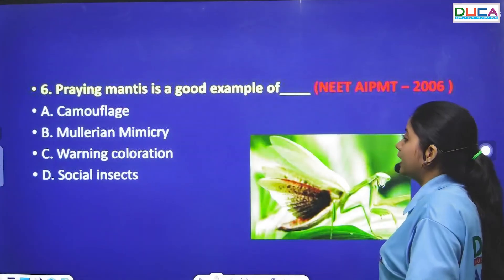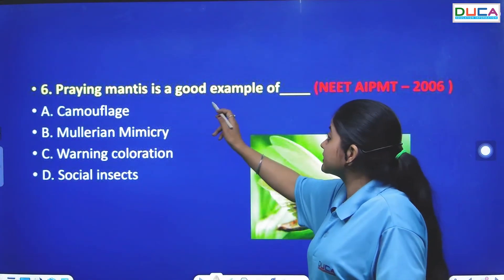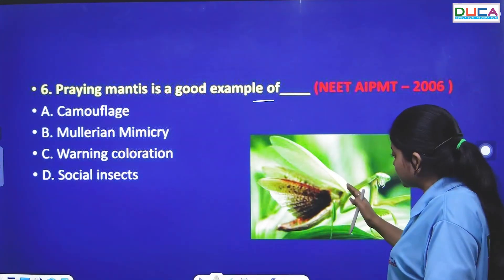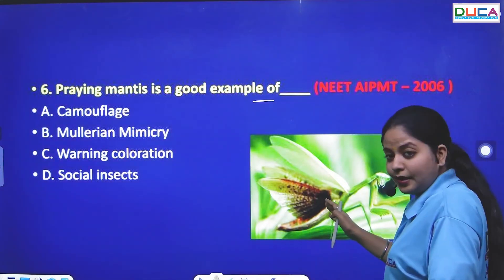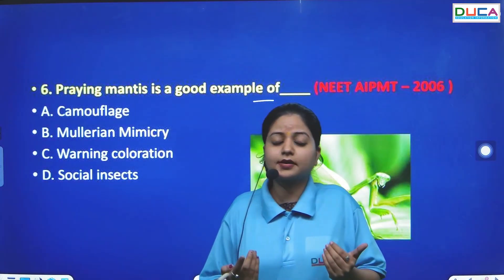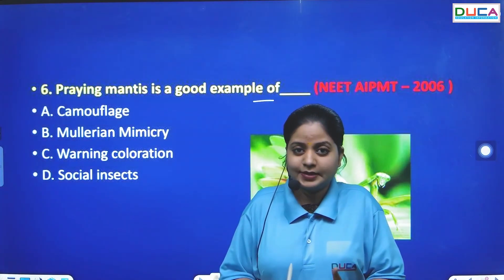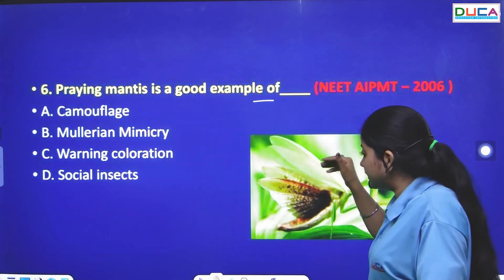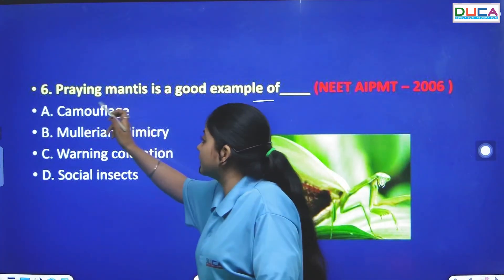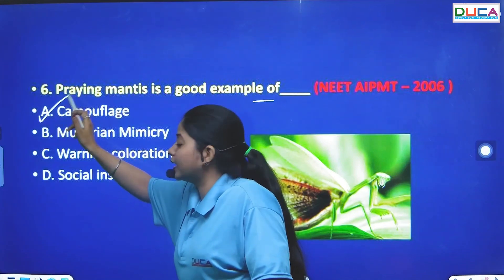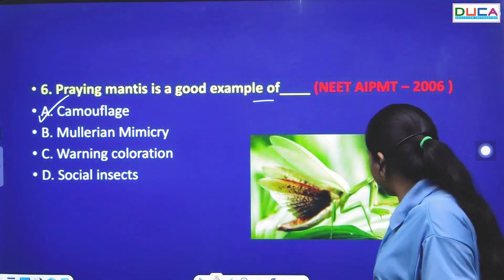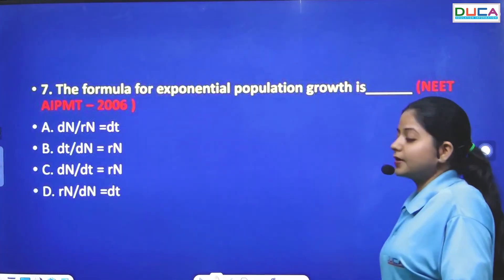In 2007, the question was: Praying mantis is a good example of what? Praying mantis is green-yellow in color and hides itself by matching the background. This is called camouflage. So praying mantis demonstrates camouflage because of its green-yellow color that matches the natural background.